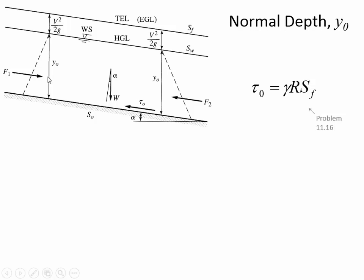F1 and F2 in the force balance come from the hydrostatic forces. If we look at a control volume of water, the water outside the control surface pushes on it due to hydrostatic pressure, which increases with depth — that's what the triangular diagram illustrates. F1 is the hydrostatic force pushing to the right, and F2 is in the opposite direction. The resistance to flow is the shear stress at the bottom.